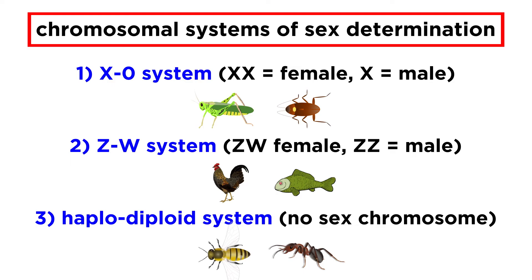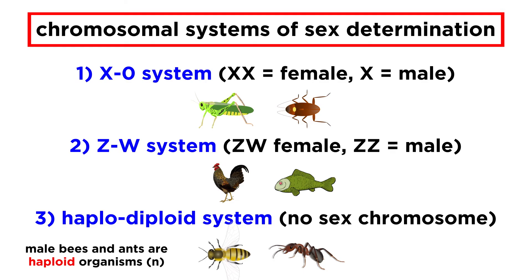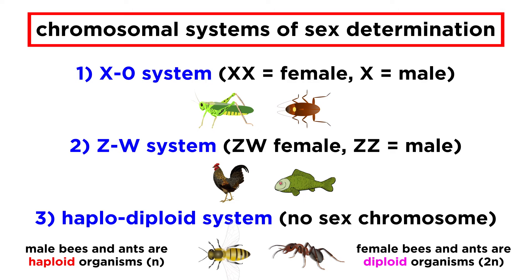A bit stranger is the haplodiploid system, found with bees and ants. Here there is no sex chromosome — it is simply that eggs that are unfertilized develop into males, while eggs that are fertilized develop into females. This means that male bees and ants, having no fathers, are haploid organisms. All of their cells have only one set of chromosomes, just like our gametes, while females are diploid, each cell containing two sets of chromosomes, just like most other animals.